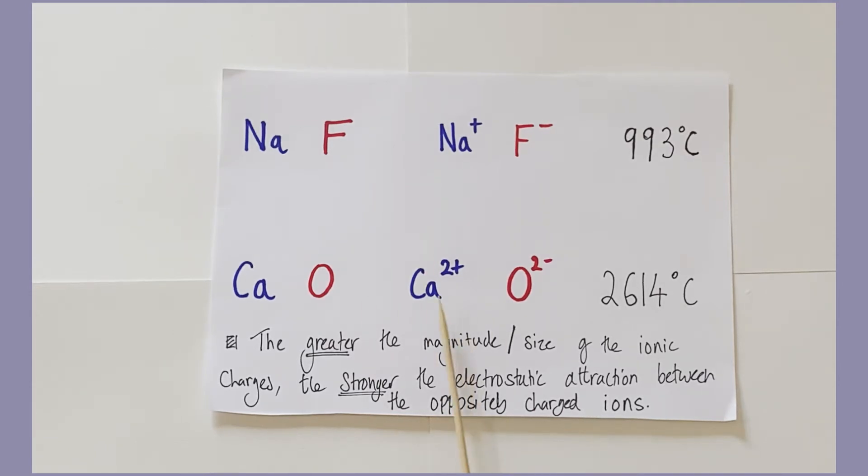Well, if you look at the charges involved, calcium ions have a two plus charge and oxide ions have a two minus charge, whereas sodium ions are only one plus and fluoride ions only one minus. So it seems to be the case that the greater the magnitude or size of the ionic charge, the stronger the electrostatic attractions formed between their ions, and therefore the greater amount of energy required to overcome those attractions and melt the structures. And that makes sense. Bigger charges, stronger attractions, greater melting points.